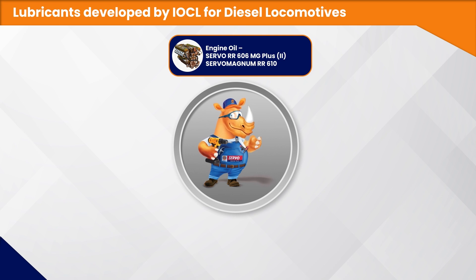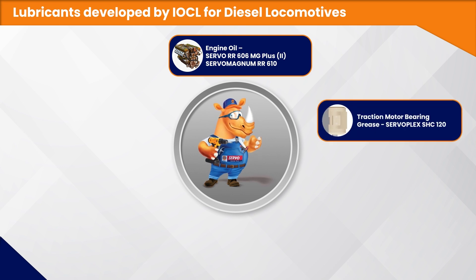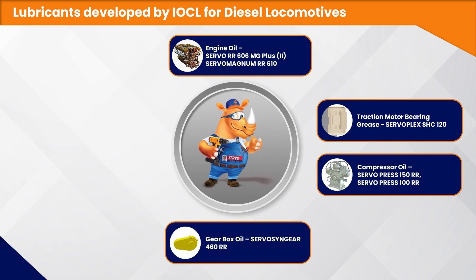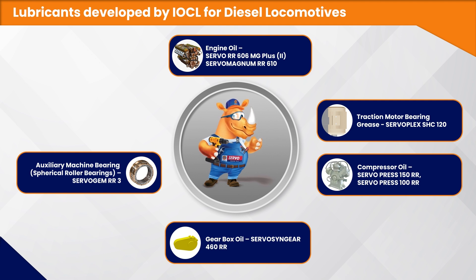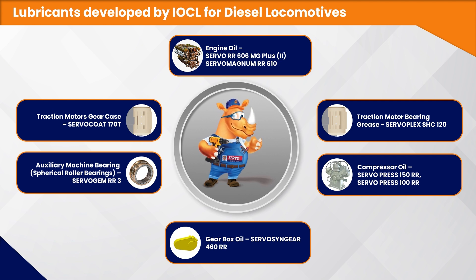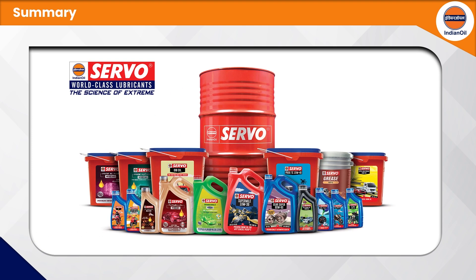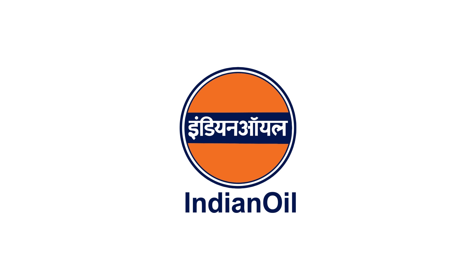The lubricants developed by IOCL for diesel locomotives include engine oils Servo RR 606 MG Plus and Servo Magnum RR 610, traction motor bearing grease Servoplex SHC 120, compressor oil Servo Press CDS, gearbox oil Servosyn Gear 460 RR, auxiliary machine bearing grease Servo GEM RR 3, and traction motor gear case lubricant Servo Code 170 T. These serve the eight compartments of a diesel locomotive.